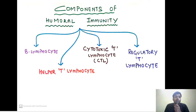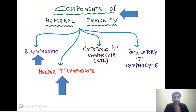The components of adaptive immunity — not just humoral — are the B lymphocyte, helper T cell, cytotoxic T lymphocyte, and regulatory T cell. To clarify: humoral immunity is the B lymphocyte arm, while helper T, cytotoxic T, and regulatory T lymphocytes come under cell-mediated immunity.